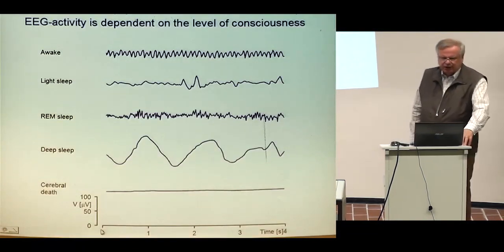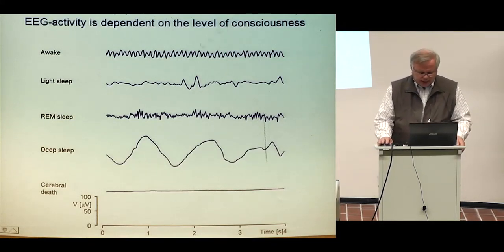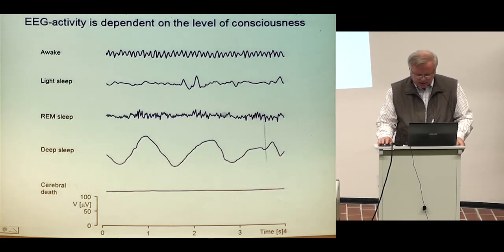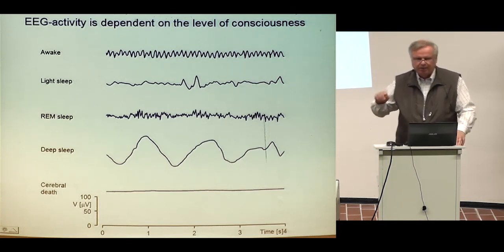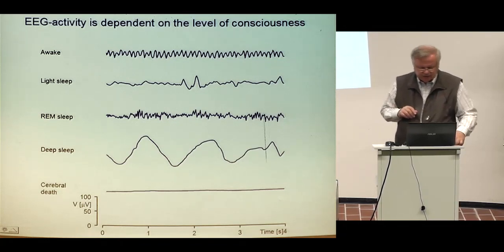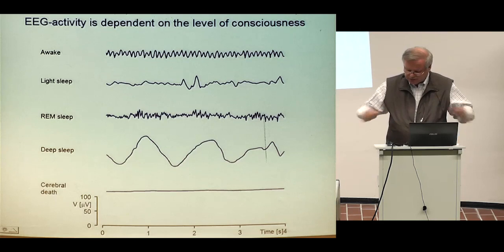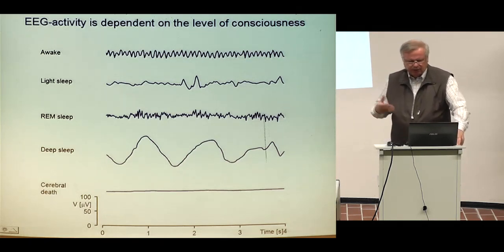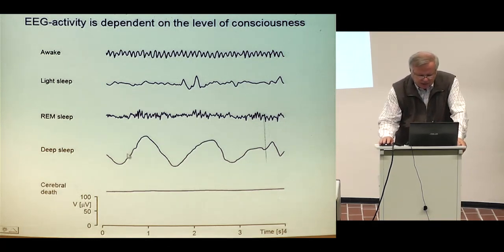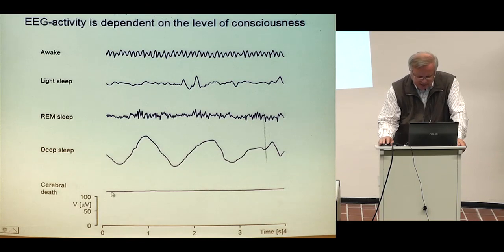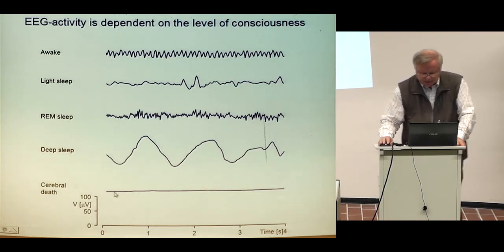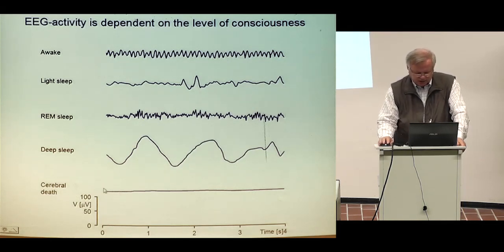EEG activity is dependent on the level of consciousness. An awake person has the alpha wave. In light sleep it looks different. In REM sleep — Rapid Eye Movement sleep — the activity is quite high, almost like being awake, with very real dreams and perhaps moving hands and legs. In deep sleep, the activity is very slow, low frequency but high amplitude. In cerebral death, when the brain has been without blood and oxygen support, there is of course just a straight line.